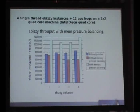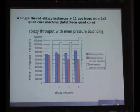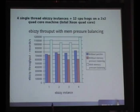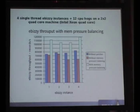Same experiment with different numbers of threads. One run is without patches, to check whether we are introducing overhead by having the patches themselves. The final bar in every column shows the improvement in eBizze throughput with memory pressure balancing. This is again on the same Intel Xeon quad-core machine.